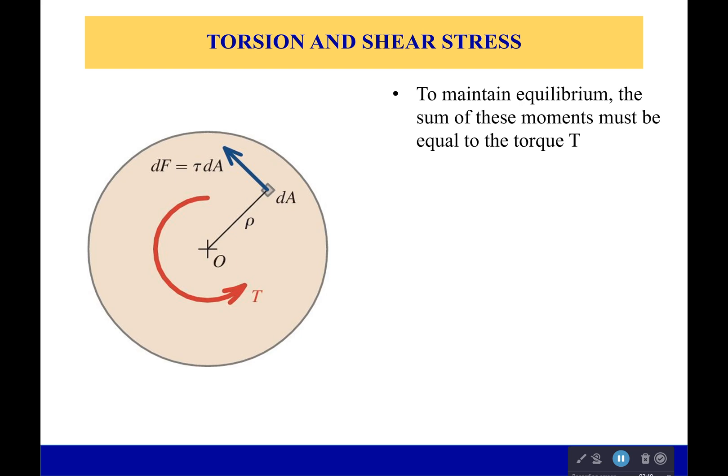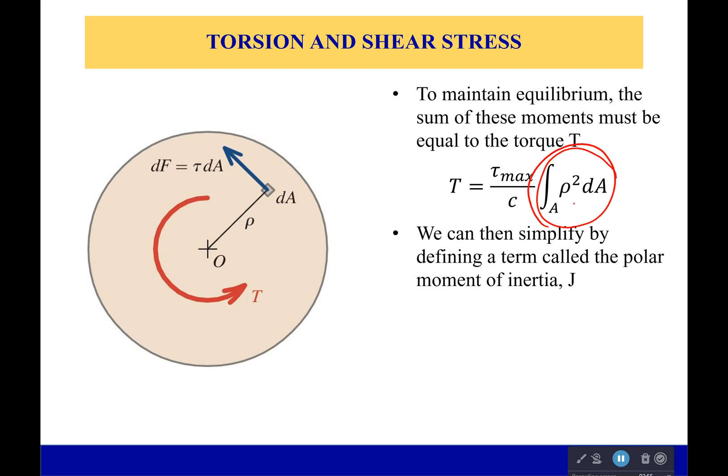To maintain equilibrium, this moment has to be equal to the torque T. So the torque is going to be equal to all of this. Then finally, rather than calculate this ourselves—though sometimes you will have to—we can just replace it with a single variable called the polar moment of inertia, which is shown with a J.